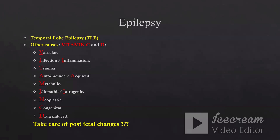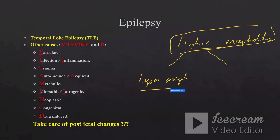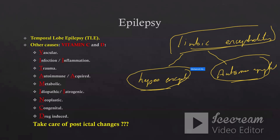I need to highlight one important term that may cause confusion — what we call limbic encephalitis. Some authors consider limbic encephalitis as herpetic or herpes encephalitis. So if we have autoimmune encephalitis, it is considered as limbic encephalitis. Also, if we have infection or herpes encephalitis, it is also considered as limbic encephalitis.